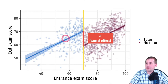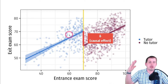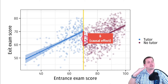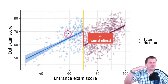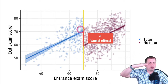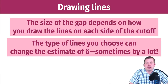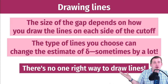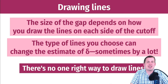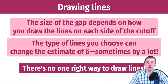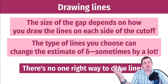If we drew the blue line flatter that would shrink the causal effect. If we drew the maroon line flatter, that would also shrink it. Drawing the blue line steeper would increase the causal effect, but it wouldn't fit the data well. How you draw these lines really matters and can change the size of the gap by a lot. There is no one right way to draw these lines — the best practice is to draw a ton of different lines and find a range of gaps.